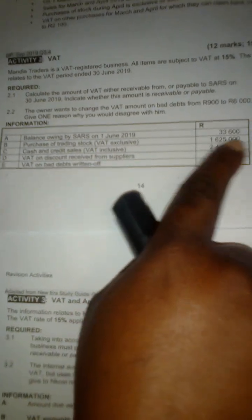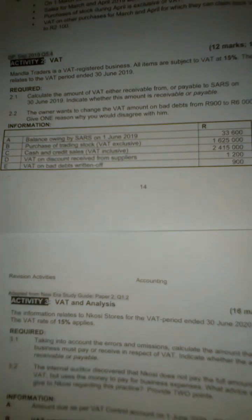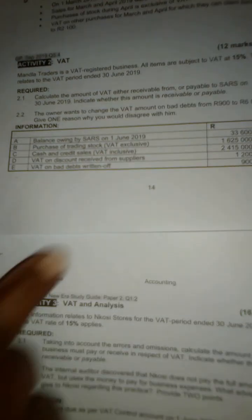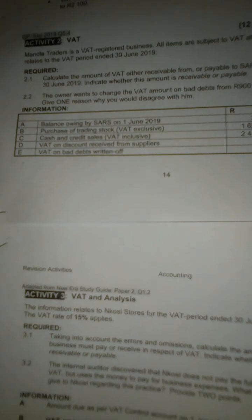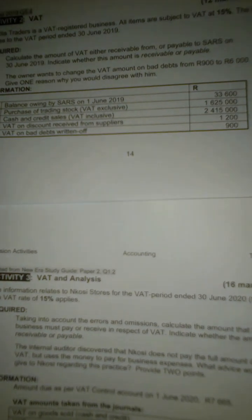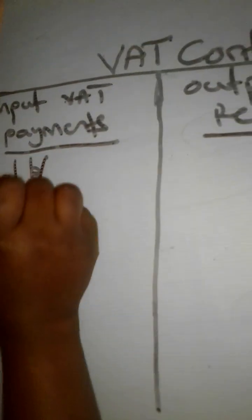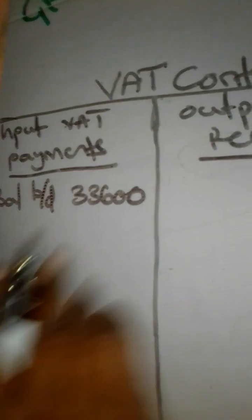From the information, the first item given is: balance owing by SARS on 1 June 2019 — 33,600. It is SARS that is owing the business, which means there is a debit balance in our VAT account. So we are going to indicate the balance brought down on the debit side: 33,600.